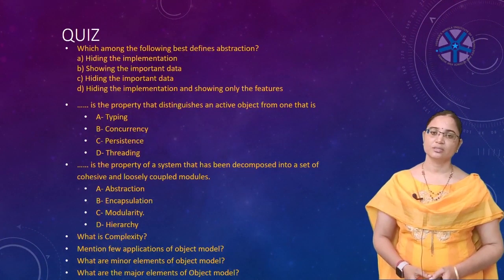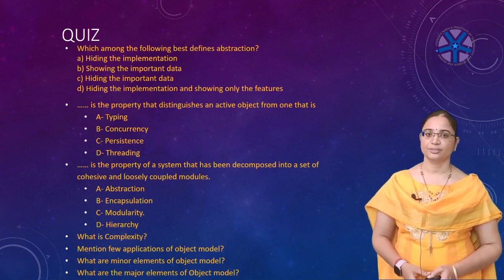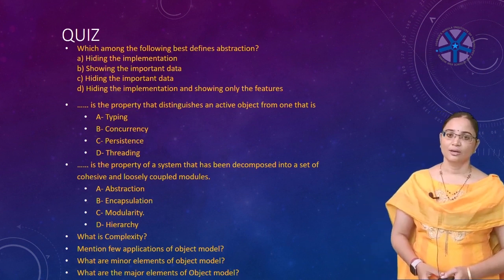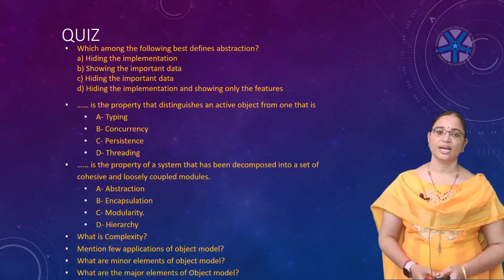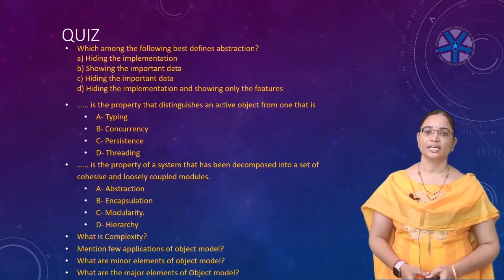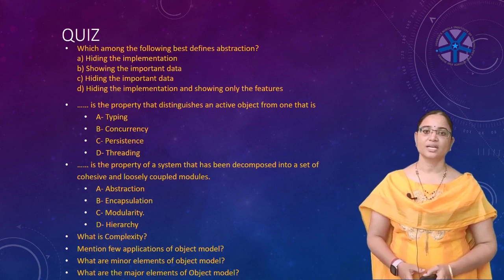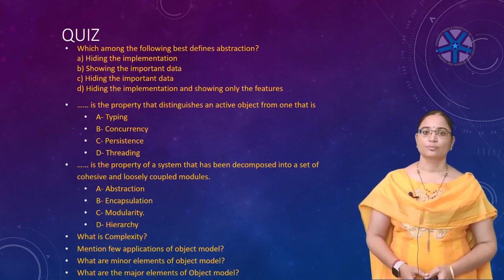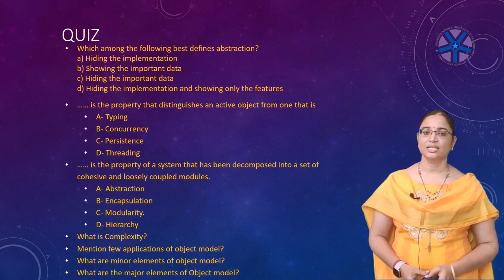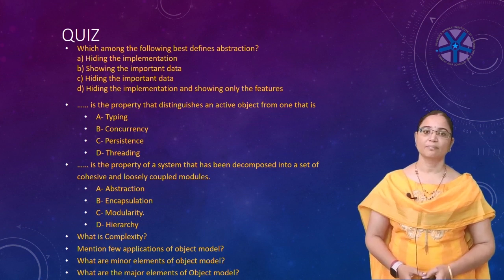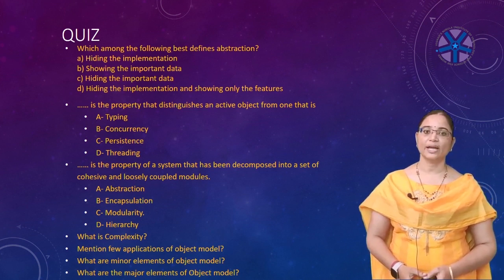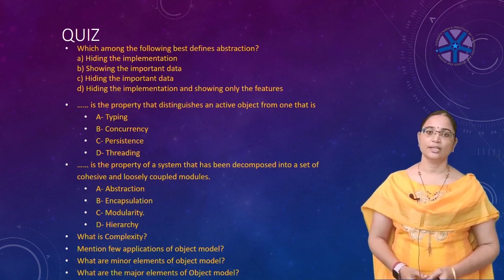Here are some quiz questions. Which among the following best defines abstraction? — hides the implementation, showing the important data, hiding the important data, hiding the implementation, or showing only features. What is the property that distinguishes an active object from others? What is the property of a system that has been decomposed into a set of cohesive and loosely coupled modules? What is complexity? Mention a few applications of the object model. What are the major elements of the object model? What are the minor elements? If you can answer all these questions, you have understood the class well. If you have any doubts, go back and replay the video.